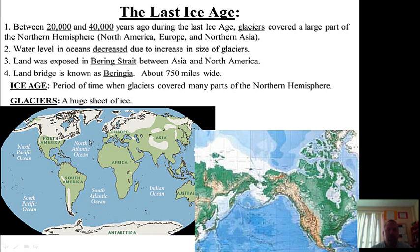As the glaciers grew in size, the ocean level began to fall. So as the glaciers got bigger and bigger, the level of the oceans went down. The water went down so much that parts of the seafloor became exposed.